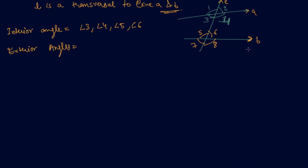And what are exterior angles? The angles outside both lines are angle 1, angle 2, angle 7, and angle 8. So angles 1, 2, 7, 8 are on the outside and angles 3, 4, 5, 6 are on the inside of the two lines. That is how we define interior and exterior angles.